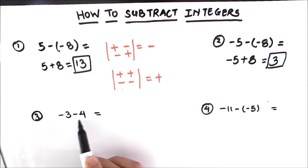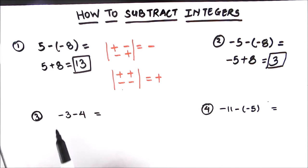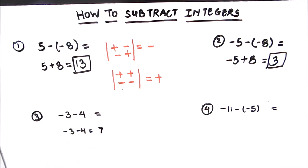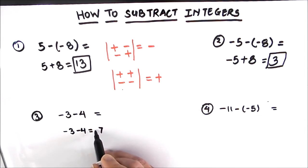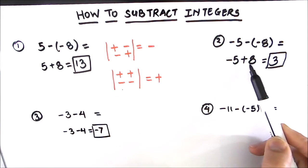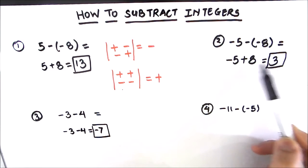Let us move on to the next example, where we have two negative numbers: negative 3 and negative 4. Whenever there are two negative signs, we add the two numbers, so negative 3 and negative 4 gives us 7. But we need to take care of the sign — since 4 is bigger than 3 and the sign for 4 is negative, the result is negative 7. As we saw in the previous example, 8 is bigger than 5 and the sign of 8 is positive, so that result was positive.